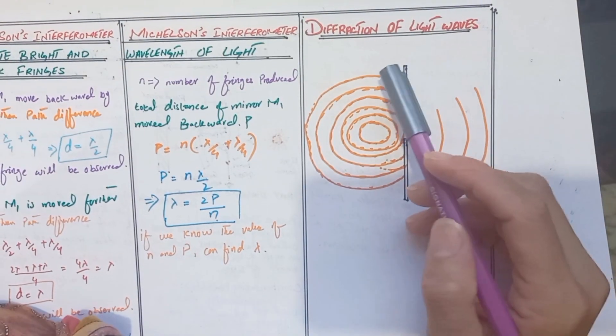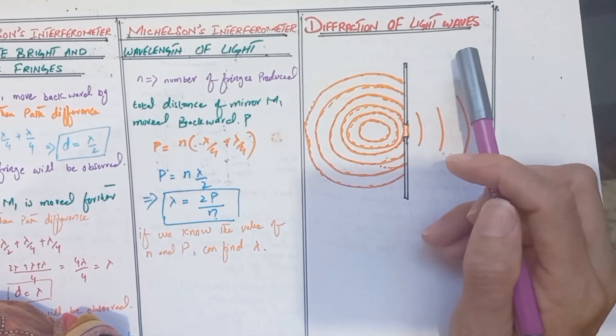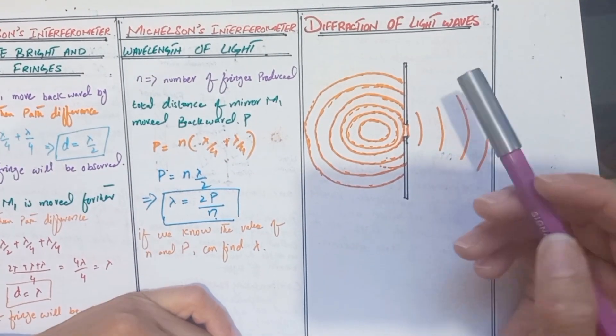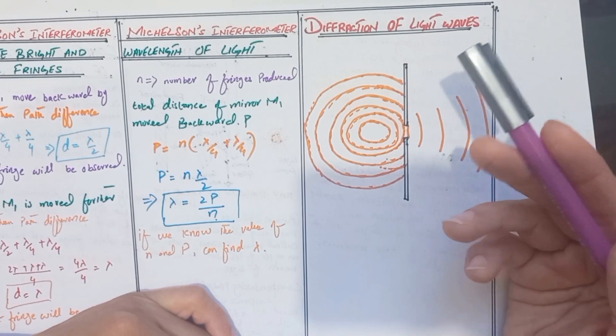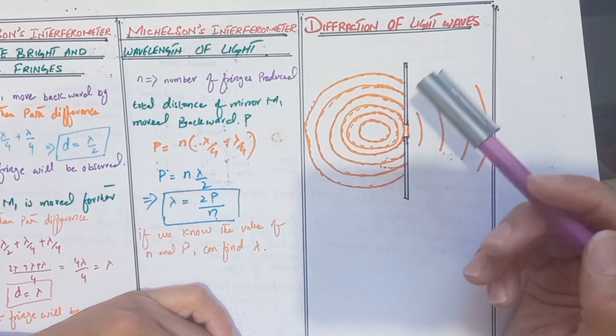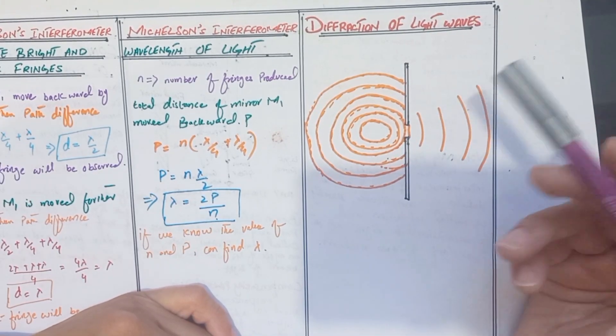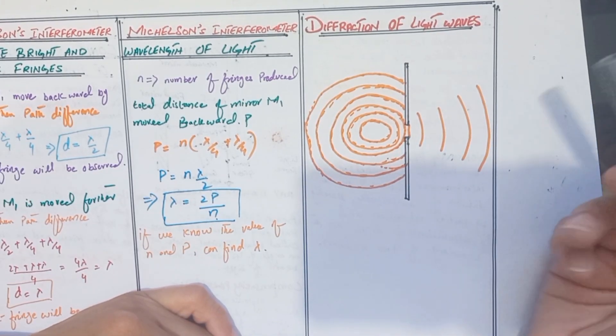Assalamu alaikum students. Today we will discuss the topic of the diffraction of light waves. In this video we will learn how an interference pattern is produced by waves diffracted by passing through a gap and travelling different distances.